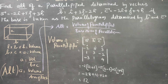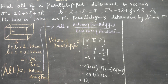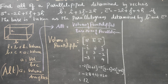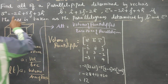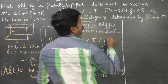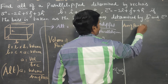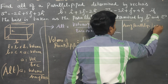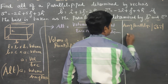Proceeding to the base area of the parallelogram. The base parallelogram is determined by vectors B and C. The area of the parallelogram equals the magnitude of B vector cross C vector.